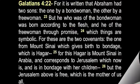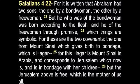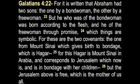In our last study, we began to look at the two covenants. Paul detailed these two covenants in Galatians 4:22: 'For it is written that Abraham had two sons, the one by a bondwoman, the other by a free woman. But he who was of the bondwoman was born according to the flesh, and he of the free woman through promise. Which things are symbolic, for these are the two covenants. The one from Mount Sinai, which gives birth to bondage, which is Hagar. For this Hagar is Mount Sinai in Arabia, and corresponds to Jerusalem which now is, and is in bondage with her children. But the Jerusalem above is free, which is mother of us all.'